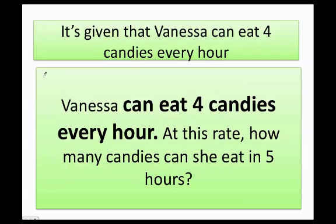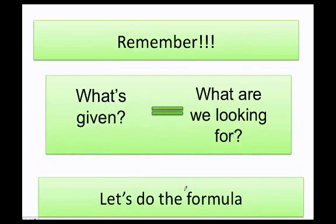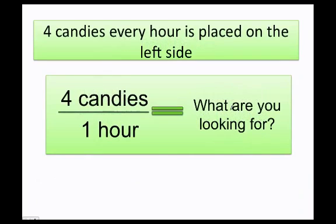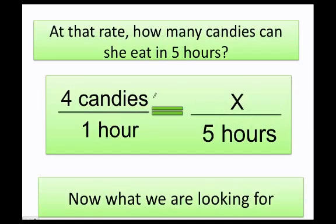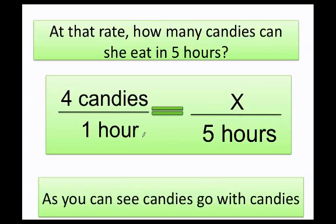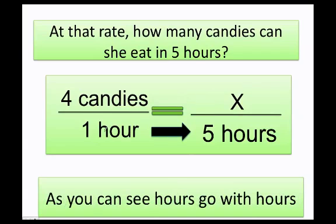Well, the problem tells me that Vanessa can eat four candies every hour. Immediately I know that I have a proportion here. Then, at this rate, how many candies can she eat in five hours? Okay, so how do I do this? First I need to remember that I have to put what's given on the left and what I'm looking for on the right. So I know that four candies every hour. Now on the other side, I need to put how many candies can she eat in five hours? Well, remember hours go with hours and candies go with candies. So candies here have to go with candies here. Hours here has to go with hours here.